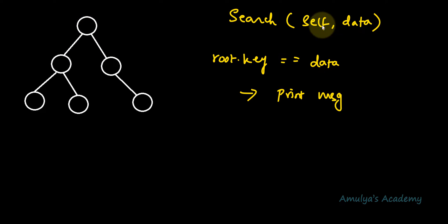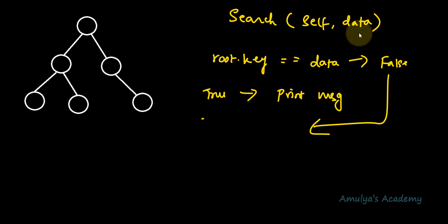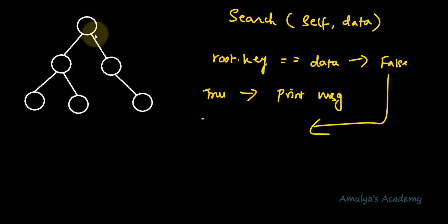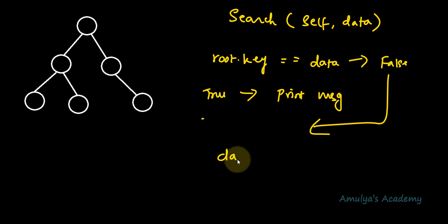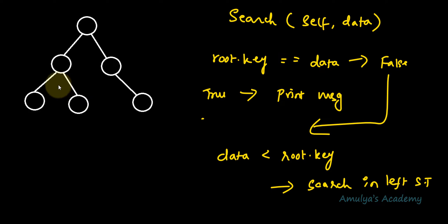If the root key equals the given data, the node is present and we print a message. If not, we check whether data is smaller than the root key. If data is smaller than the root key, we search in the left subtree. If data is greater than the root key, we search in the right subtree — this is the rule of the binary search tree.